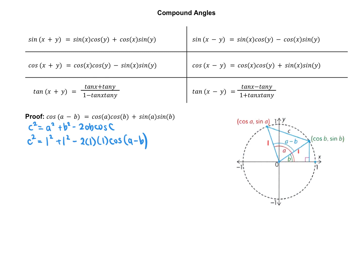Let's clean this up. 1² + 1² is just 1 + 1, which is 2. And then 2 times 1 times 1 gives us 2·cos(A − B). Remember that this 2 is attached to the cos(A − B) with multiplication, so you can't do 2 minus 2 — that is not okay. But that's as far as we can go here.